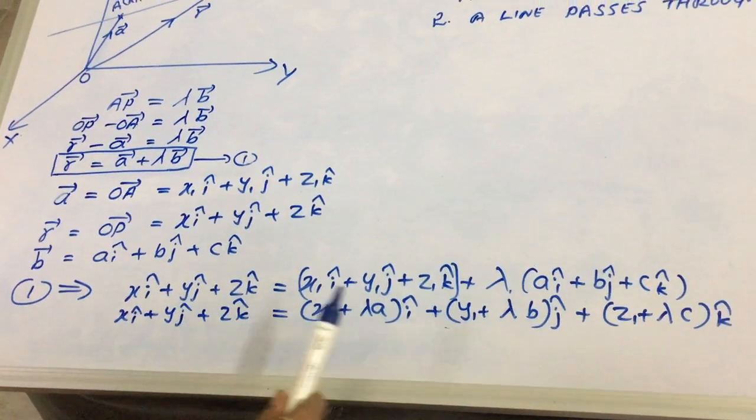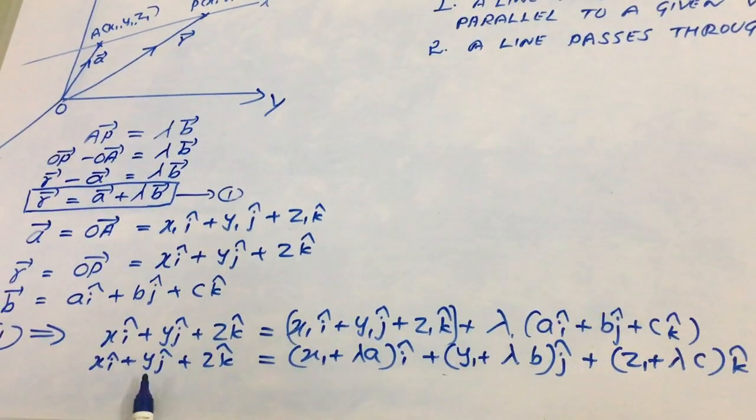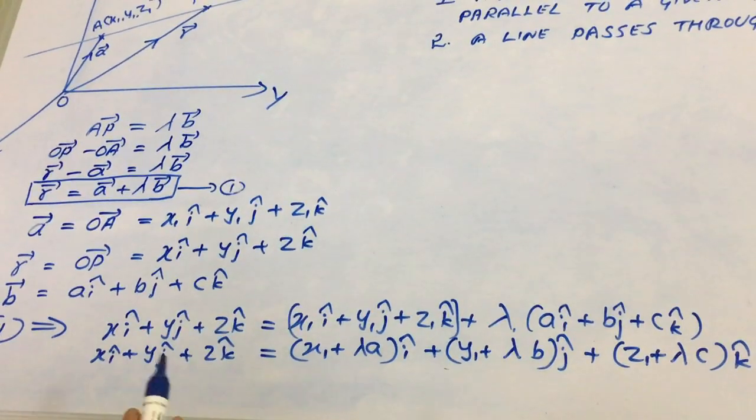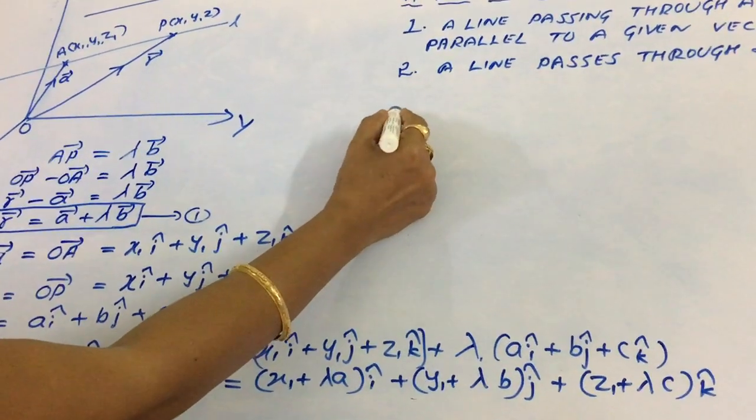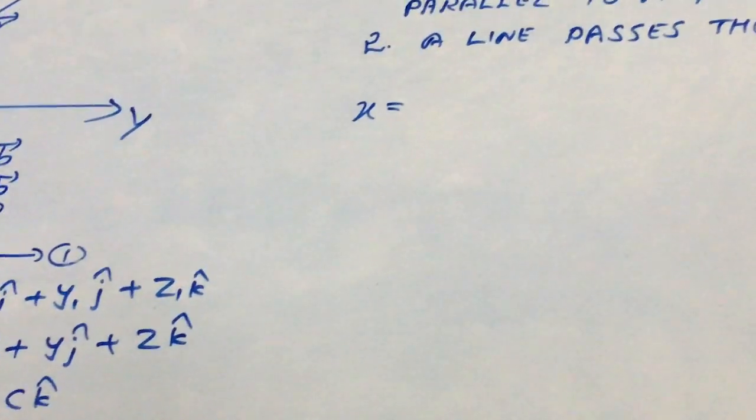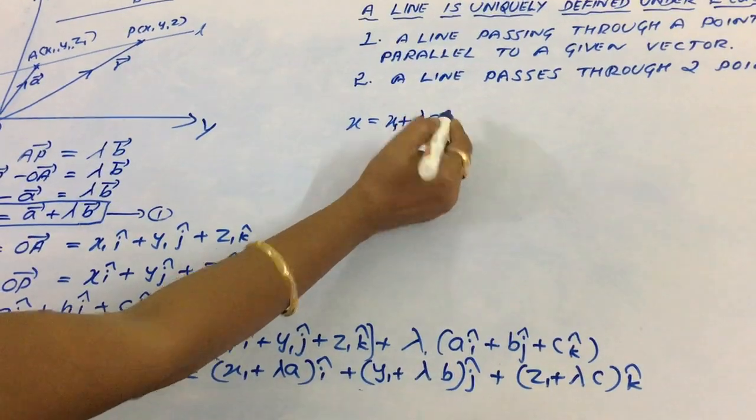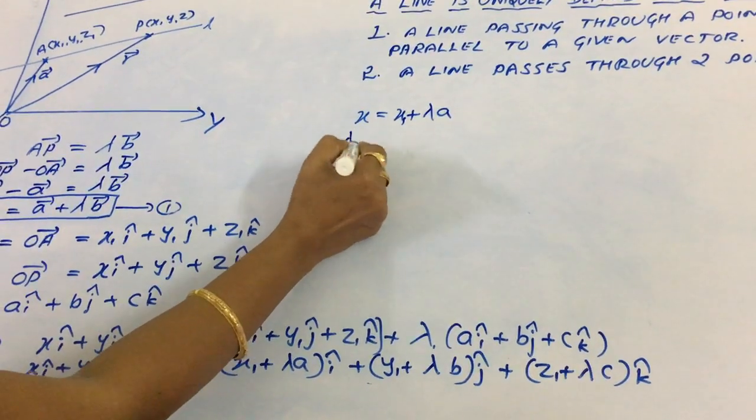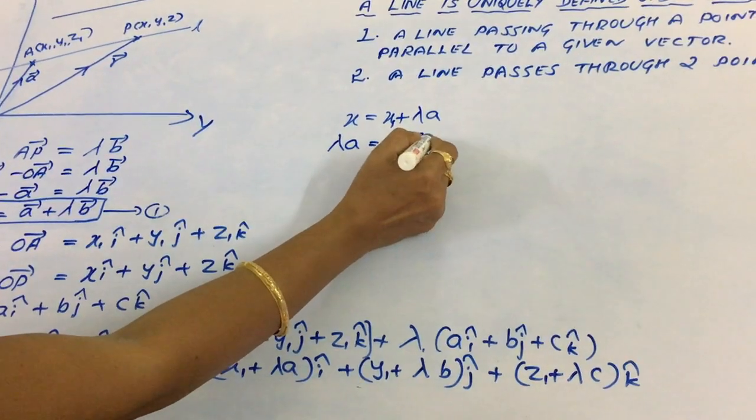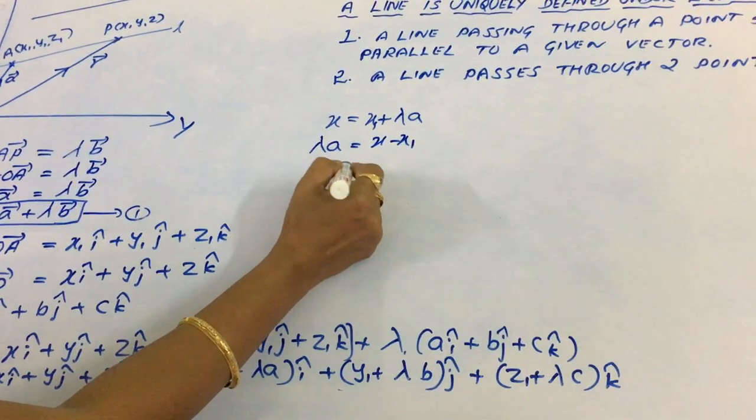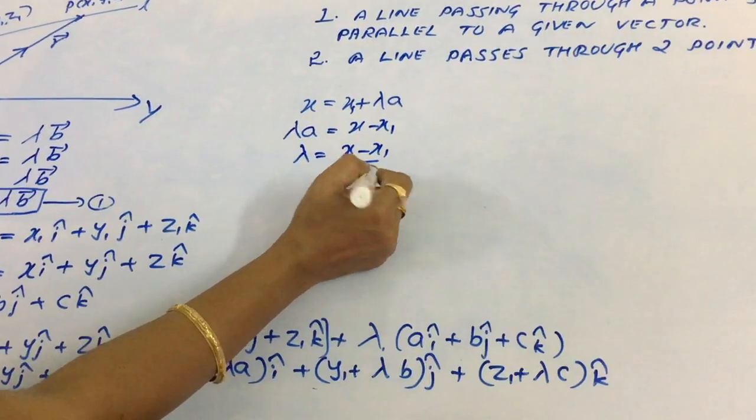As we know that when two vectors are equal, their i-coefficients, j-coefficients, and k-coefficients must be equal. Therefore, x equals x1 plus lambda A. Lambda A equals x minus x1, so lambda equals (x minus x1) divided by A.